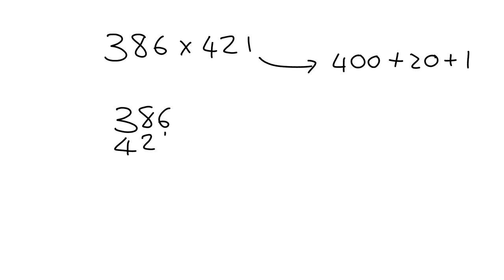386 multiplied by 421. We start from the right and we say 1 times 6, that is 6. Then we say 1 times 8, that's 8, and then we say 1 times 3, that is 3. Then we move on. We've now got to multiply by 20. So what we need to do is put down the 0 at the end, and then we can just multiply by 2.